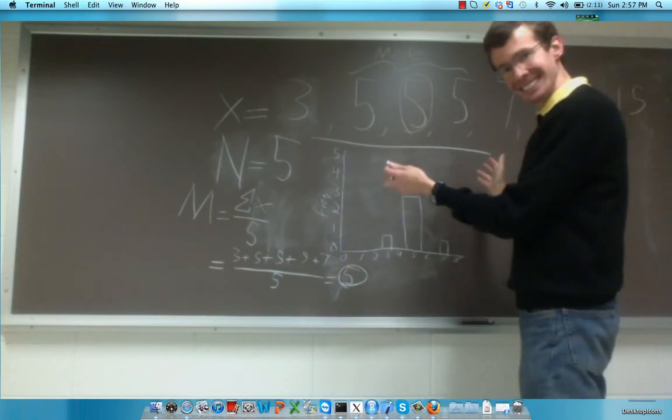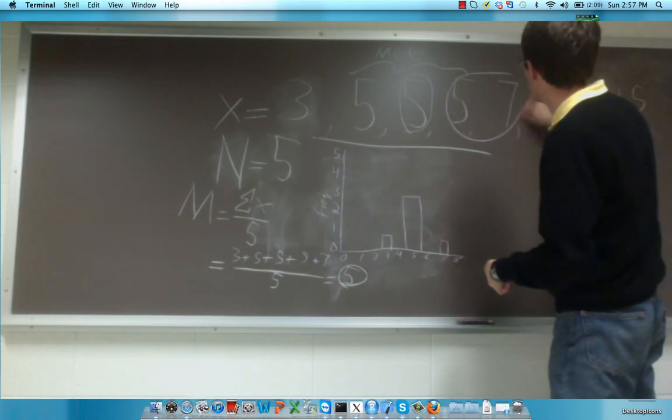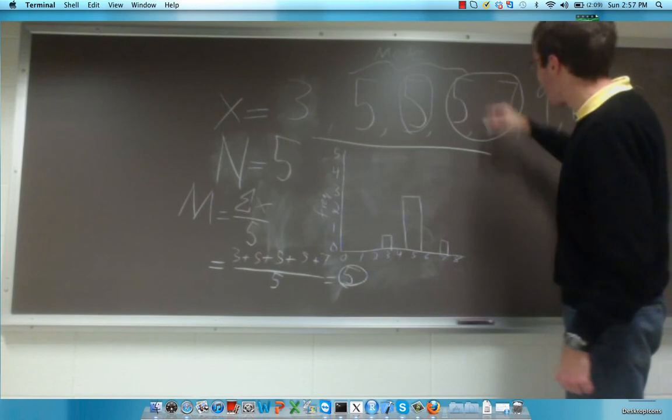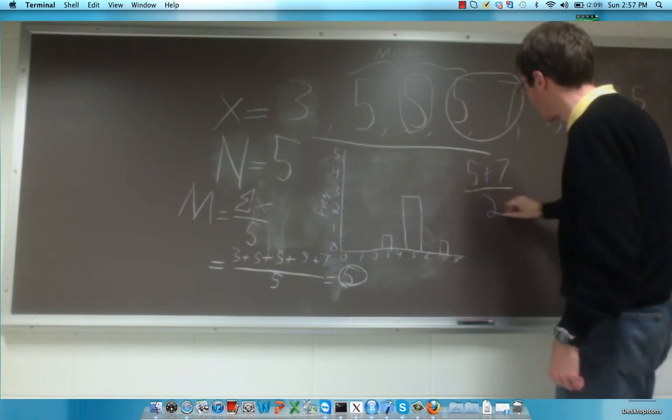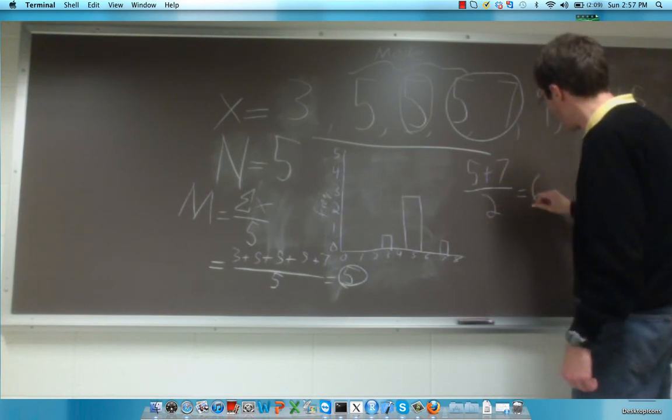Now, we have 8 observations, and these two are right in the middle. To calculate the median, we would take the average of these two, which is 5 plus 7 over 2, or 12 over 2, which is 6.